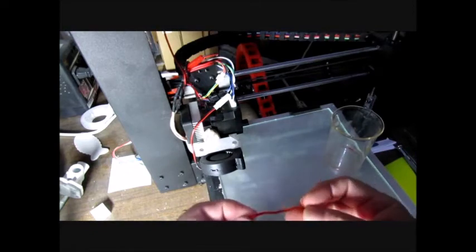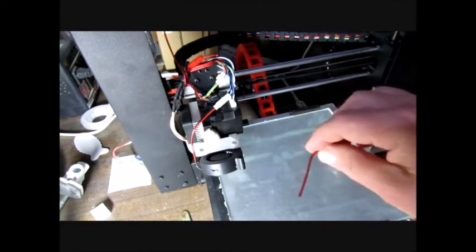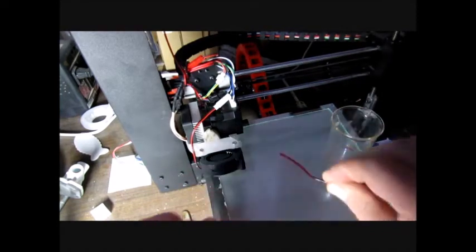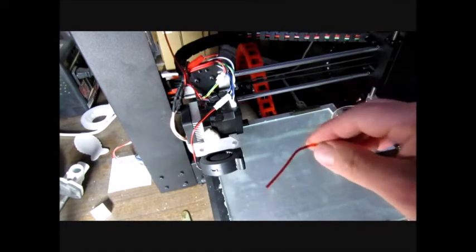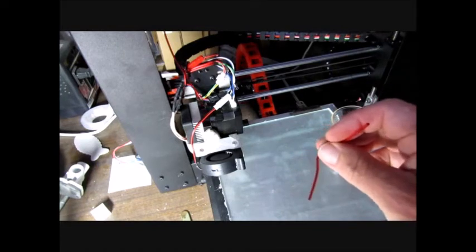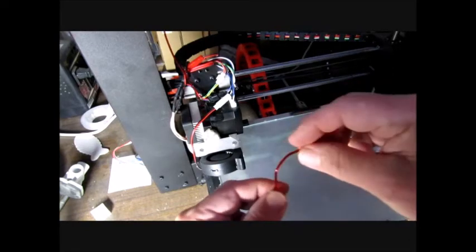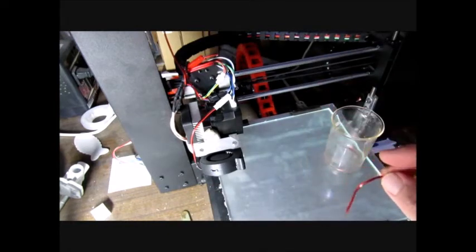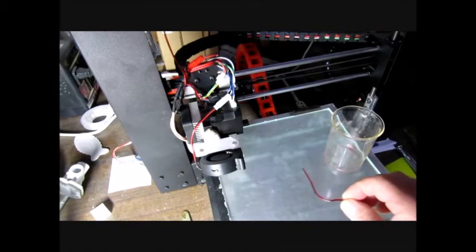The other issue with it being so flexible is actually getting it down into the hot end. Obviously normally you'd straighten the end out and push it down, but this stuff simply won't straighten out and getting it to find the end of the hot end is a bit of a challenge. Obviously also being flexible, you can't really push it very much. But after a bit of fiddling we've got that located, so time to do the first print.